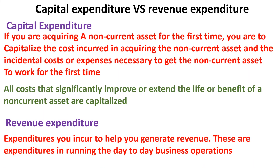Another example may be having a block or a building and deciding to convert it into an office block. If you're going to convert it into an office block, there's going to be a significant amount of money spent in redesigning the block so that it turns into offices or cubicles. Such expenditures are capital. So on top of the costs incurred in getting a fixed asset to your premises for the very first time, capital expenditure also refers to all costs that extend the life or benefit of an asset significantly.